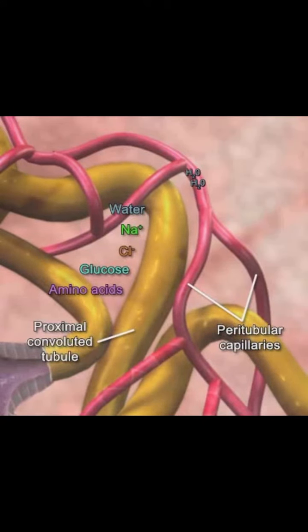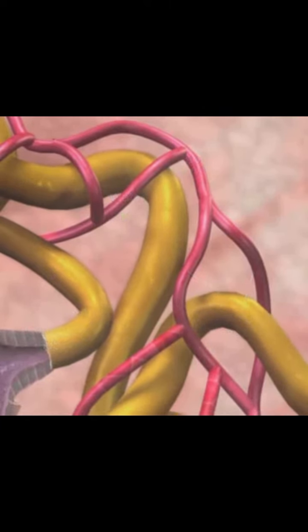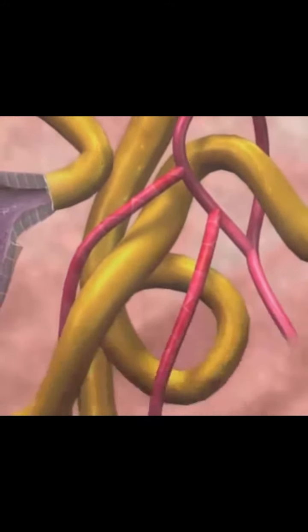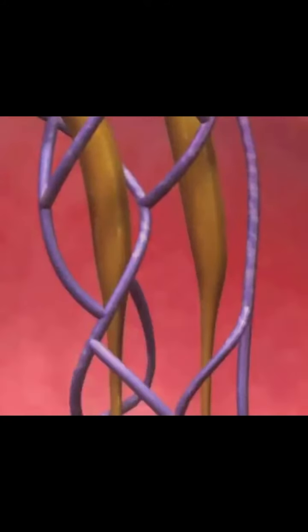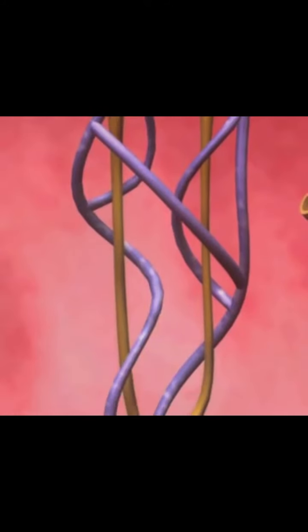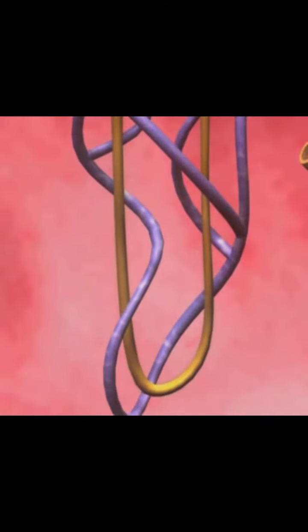In the proximal convoluted tubule, the sodium and chloride are transported out of the tubule into the blood. Then, water follows.